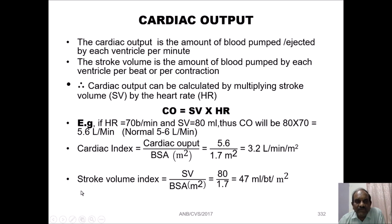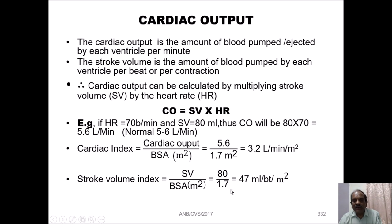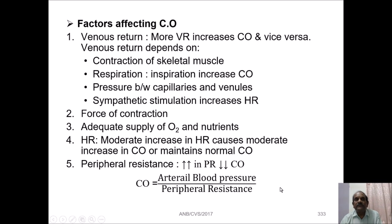Similarly, we can determine the stroke volume index: stroke volume divided by body surface area — 80 divided by 1.7 — equals 47 ml per beat per square meter.